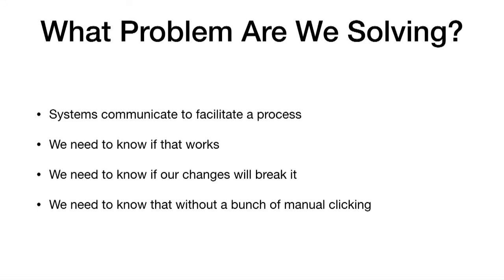So we build these software systems. And unless we're building a tightly integrated monolithic system, we have lots of different bits of software. Those pieces of software don't do any one business thing by themselves — they collaborate together to do a business process. We want to know if that works, and we want to know that as we make changes, does the business process still work? Will the change I'm introducing break things? We want to know that in a more automated fashion.